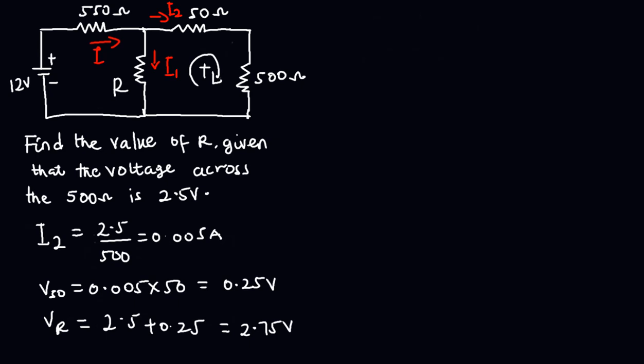Now, how do we find the actual value of R? We know that the voltage drop across this resistor, Vr, will be equal to I1 multiplied by R. So R will be equal to Vr over I1. We already know the value of Vr, so what's left is to find I1.